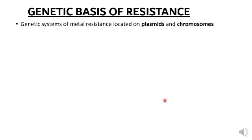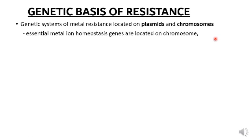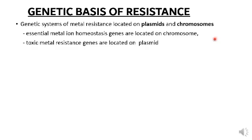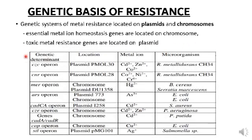The genetic system of metal resistance is located on plasmids and chromosomes. Essential metal ion homeostasis genes are located on the chromosome, while toxic metal resistance genes are located on plasmids. This table shows the toxic metal resistance genes, their location on plasmid or chromosome, their resistance to metal ion, and the corresponding microorganisms. Thank you.